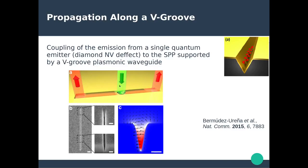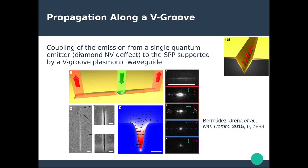A quantum emitter can be placed inside the groove and it will couple to the SPPs propagating along the edge of the groove. When reaching the end of the groove, it will out-couple and re-emit light. In this particular example, they used a diamond NV defect and observed emission of light on both ends of the v-groove depending on the polarization of the optical excitation and the polarization of the detection.